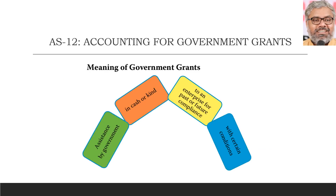First of all, what is the meaning of a government grant? Government grant is the assistance by the government, whether in cash or in kind, to an enterprise for the past or future compliance with certain conditions. Naturally, government grant is assistance given by the government to enterprises, and it will come with certain conditions. Conditions will apply along with government grants in general.